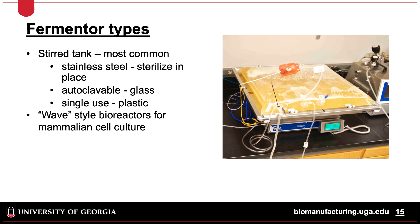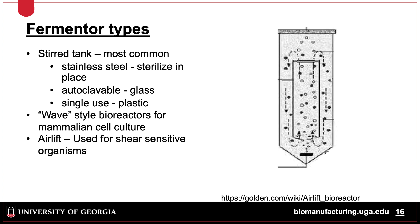Bioreactors are typically used for biopharmaceutical product production or as seed tanks for larger bioreactors. The airlift bioreactor uses gas bubbles to mix and oxygenate the media within the vessel, thereby resulting in less shear stress than fermenters. The bubbles typically originate from the bottom of the vessel and circulate inside to help with mixing and oxygenation. These bioreactors are used for growing shear-sensitive cells such as plant cells, since there are no impellers which cause shear stress.